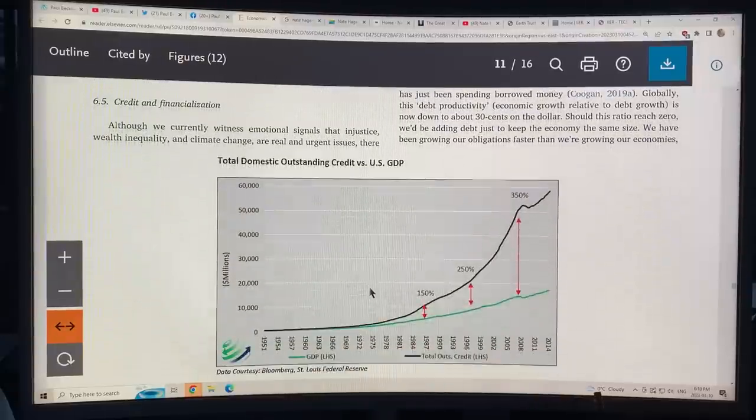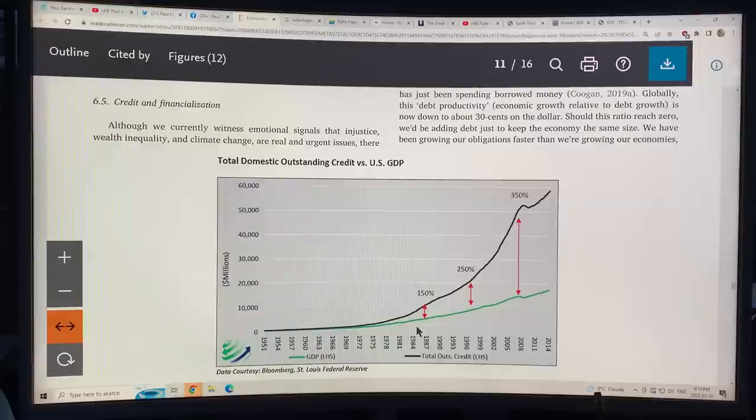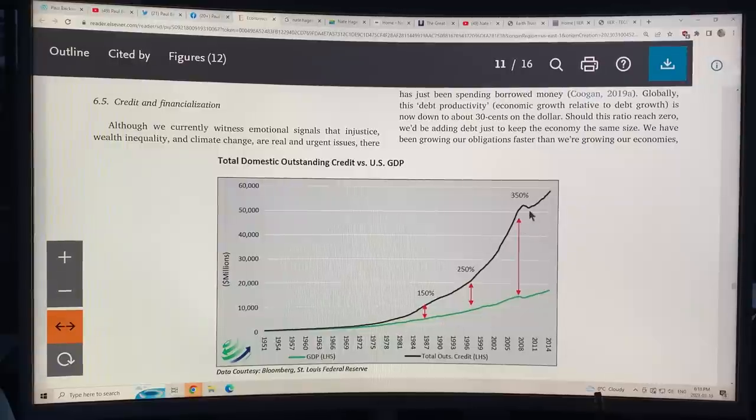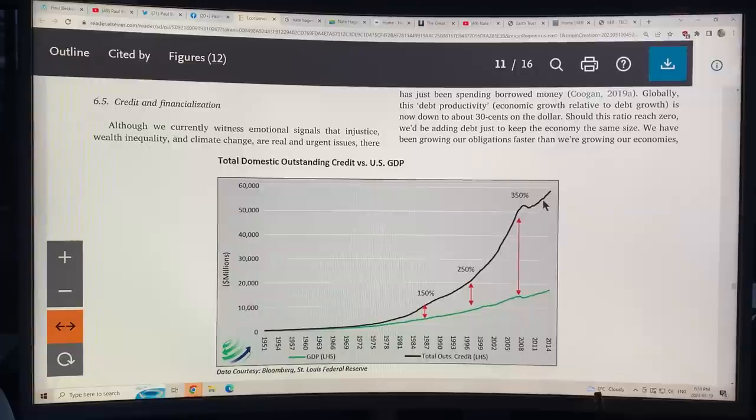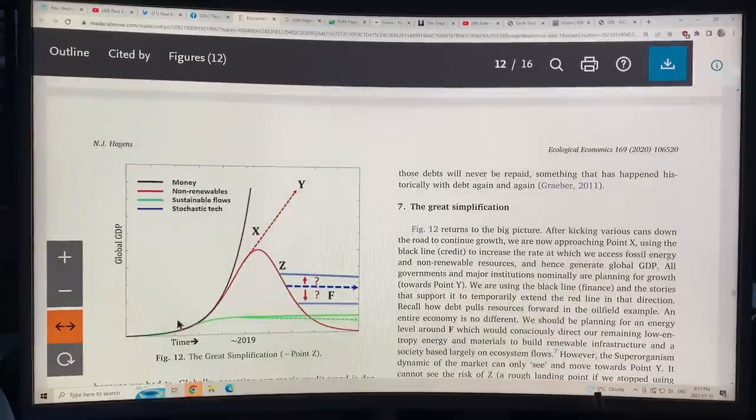So and here's the credit and financialization, which is a complete artifact. It's just a human creation, the credit. This is total domestic credit versus GDP. So GDP is still growing, but credit is growing much, much faster. In fact, more than three and a half times faster.